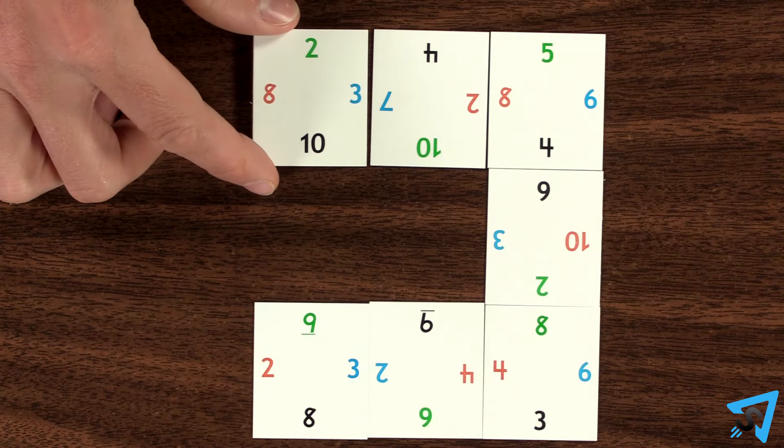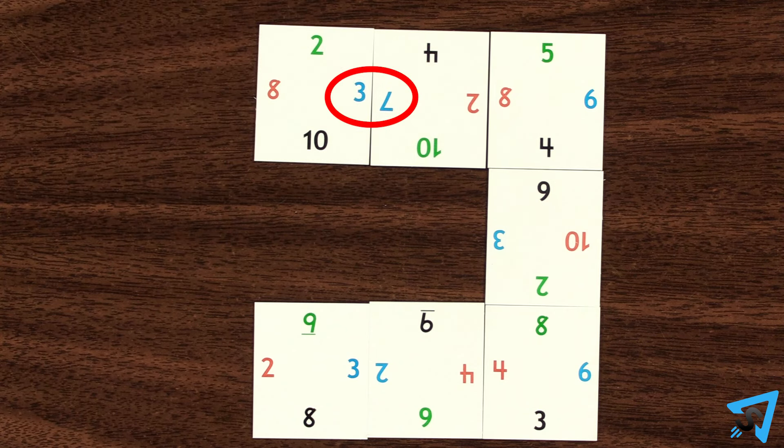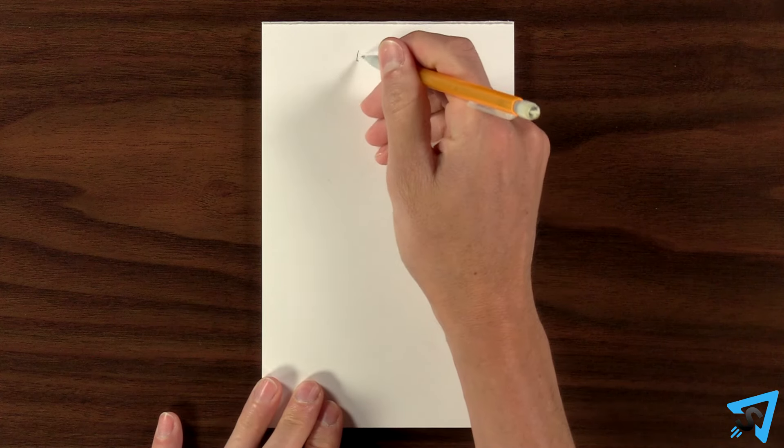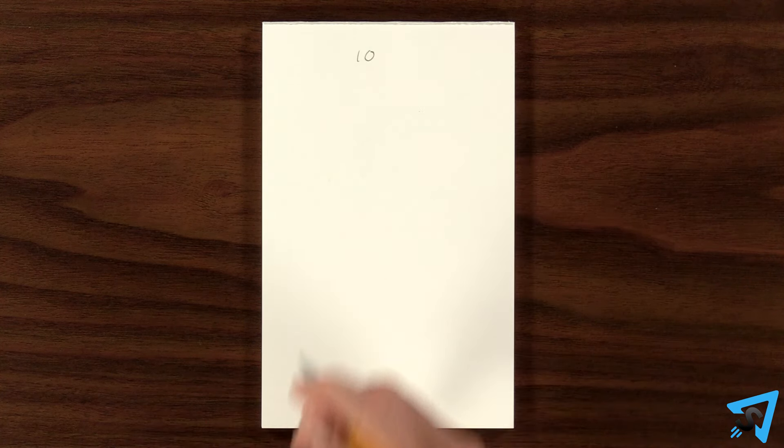After playing your card, if the sum of the matching colors equals 5, 10, 15, or 20, then you score that many points for each match and write it down on your score sheet.